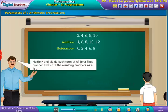Multiply and divide each term of AP by a fixed number and write the resulting numbers as a list.